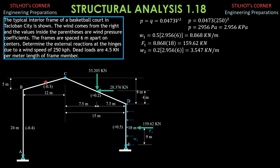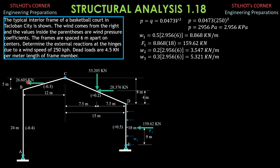For the horizontal component of wind load on BC, it is also leftward because it is suction — away — leftward and upward. W3 equals 0.3 times 2.956 times 6, equals 5.321 kilonewtons per meter. Therefore, 5.321 times 5 — the horizontal force on BC — acts at the center, leftward, and is 26.605 kilonewtons. The vertical component of wind load is upward because this is suction: 5.321 times 12 equals 63.852 kilonewtons. The centroid is 6 meters from B horizontally, 6 meters from C horizontally, and 2.5 meters from B vertically.